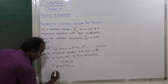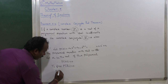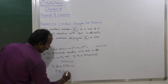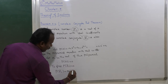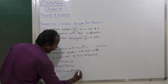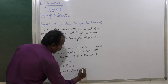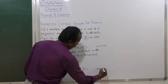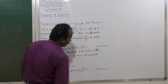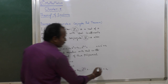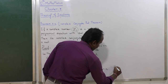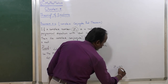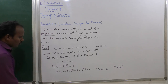So first of all, let us consider p of z₀-bar. That is equal to — replacing the value — aₙ z₀ to the power n, the whole bar, plus aₙ₋₁ z₀ to the power n minus 1, the whole bar, plus ... plus a₁ z₀ bar, plus a₀. Now, the result for complex numbers: zⁿ bar is equal to z-bar the whole power n.